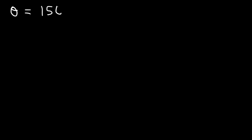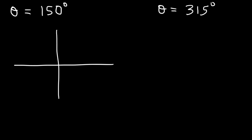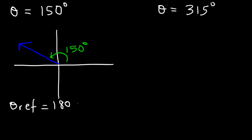Try these two examples. Find the reference angle for 150 and also 315. So 150 is in quadrant 2. To find the reference angle in quadrant 2, we use the formula: 180 minus the angle in quadrant 2, which is 150. So the reference angle is 30.